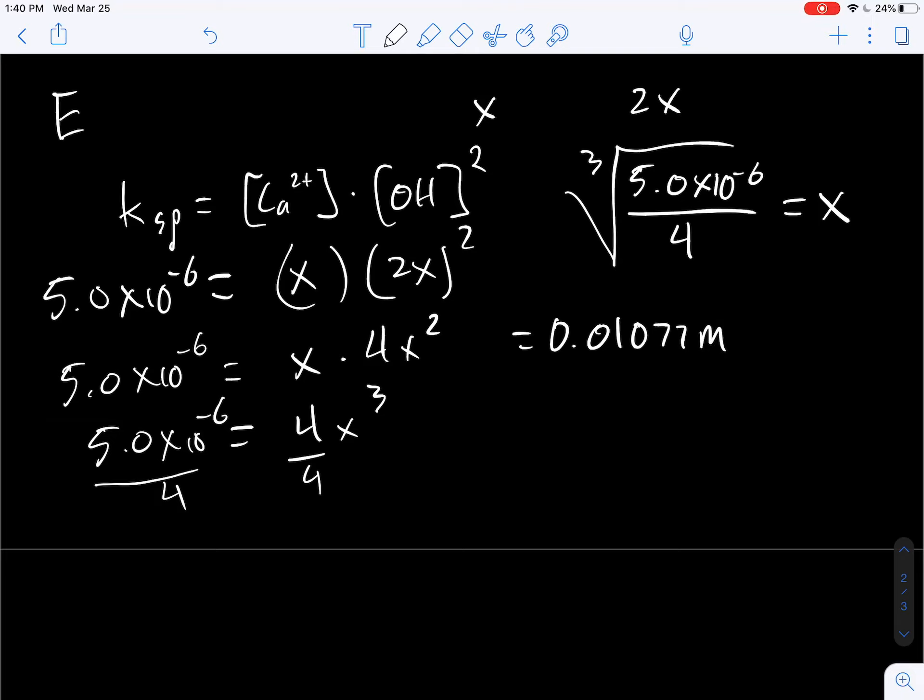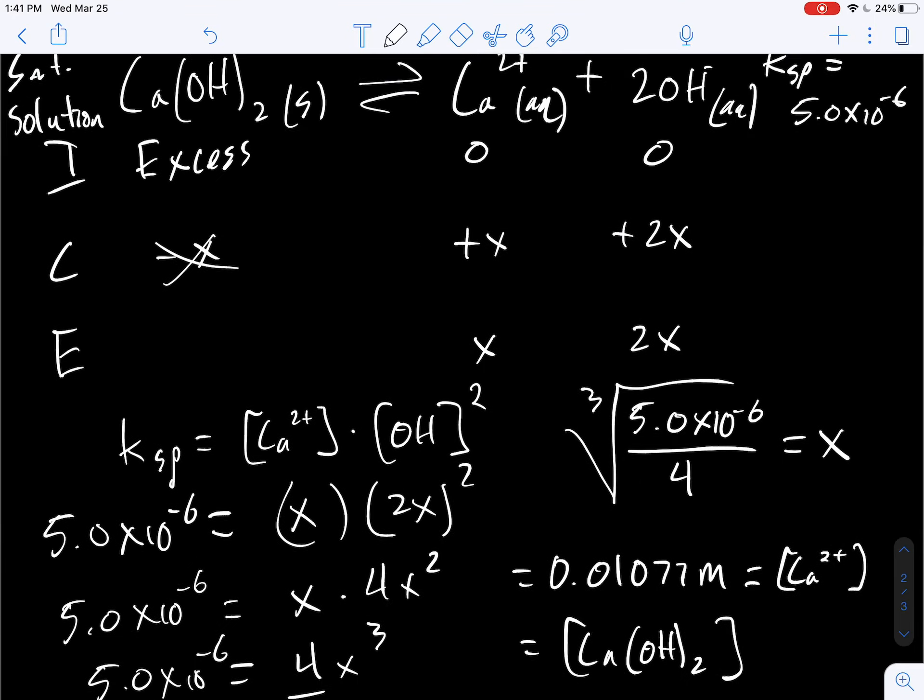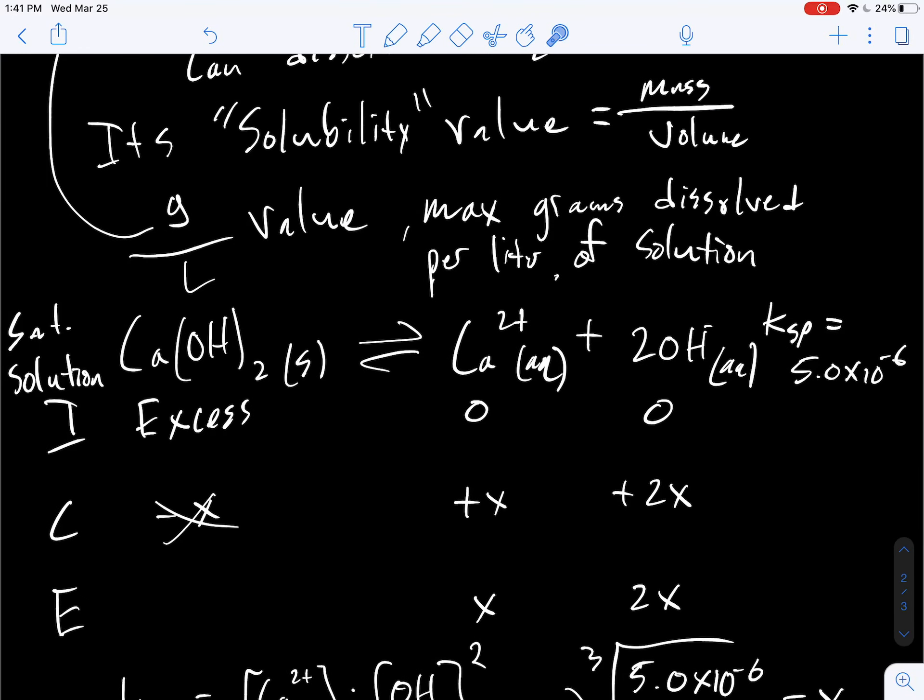0.01077 molar. See, now we actually have molarity values here. So that's how much molar. That's going to be our concentration of Ca2 plus. x and hydroxide is going to have the same value.